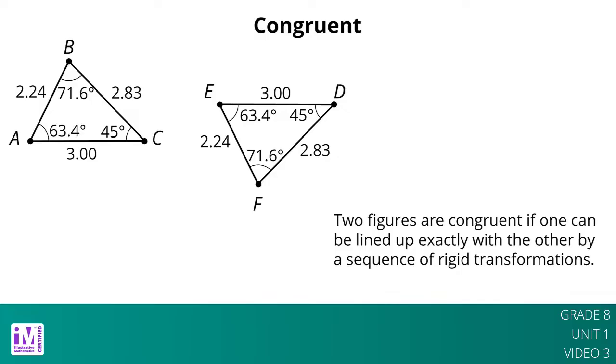For example, triangle EFD is congruent to triangle ABC because they can be matched up by reflecting triangle ABC across AC followed by the translation shown by the arrow.